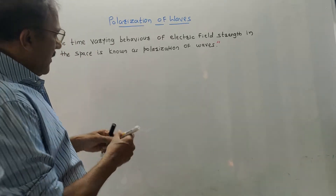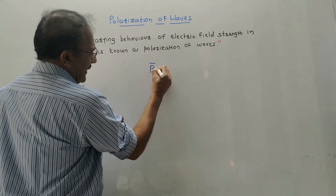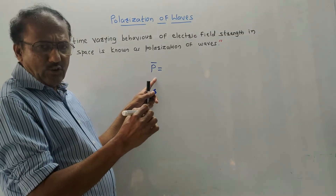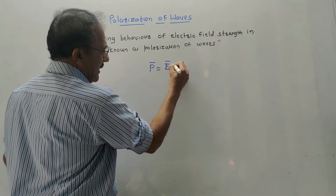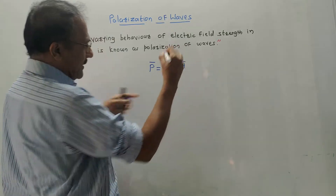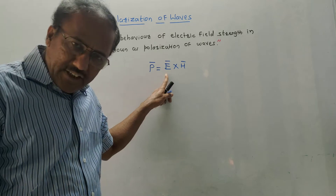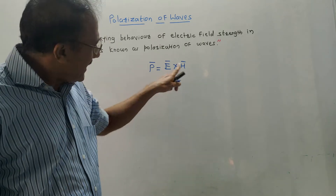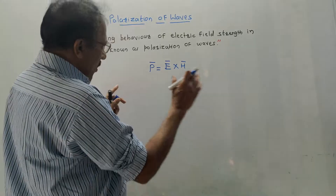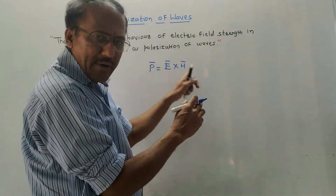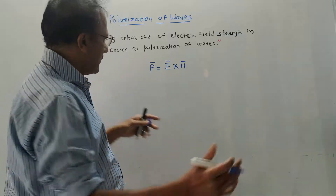First part: according to the Poynting theorem, power is given by P bar. P bar is the notation for power, expressed as P bar = E bar cross H bar. This is the cross product notation. E bar is electric field intensity and H bar is magnetic field intensity.